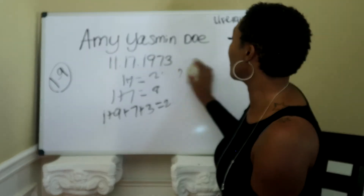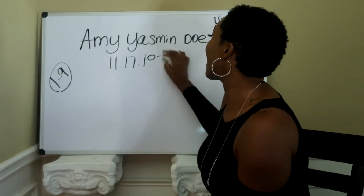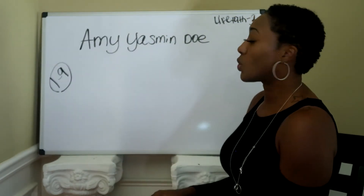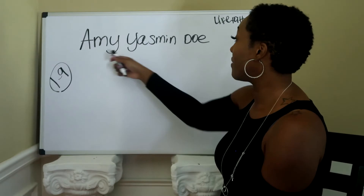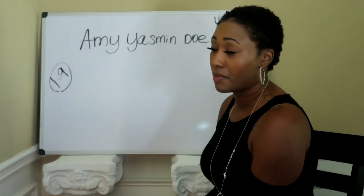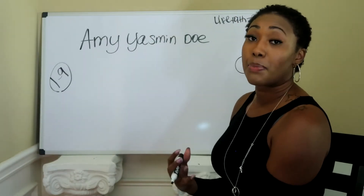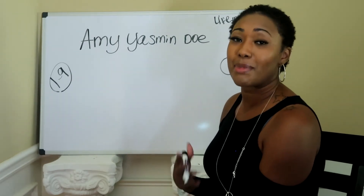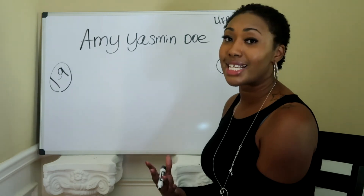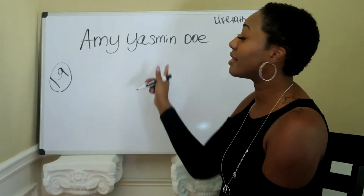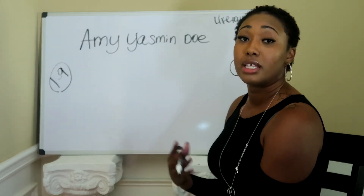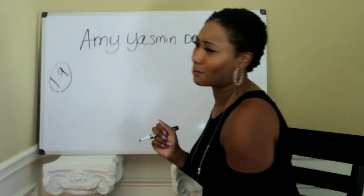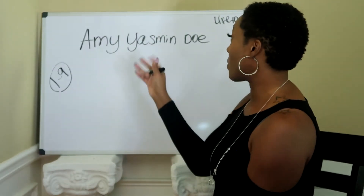Let's go ahead and move on to your destiny number. Ms. Doe's destiny number — or your destiny number in your particular chart — is based on the sum of the letters in your full given name at birth. Some people like to use their nickname or their married name, and that's fine. But to find your true destiny number, you have to go by the name given at birth and add up the sum of all those letters.